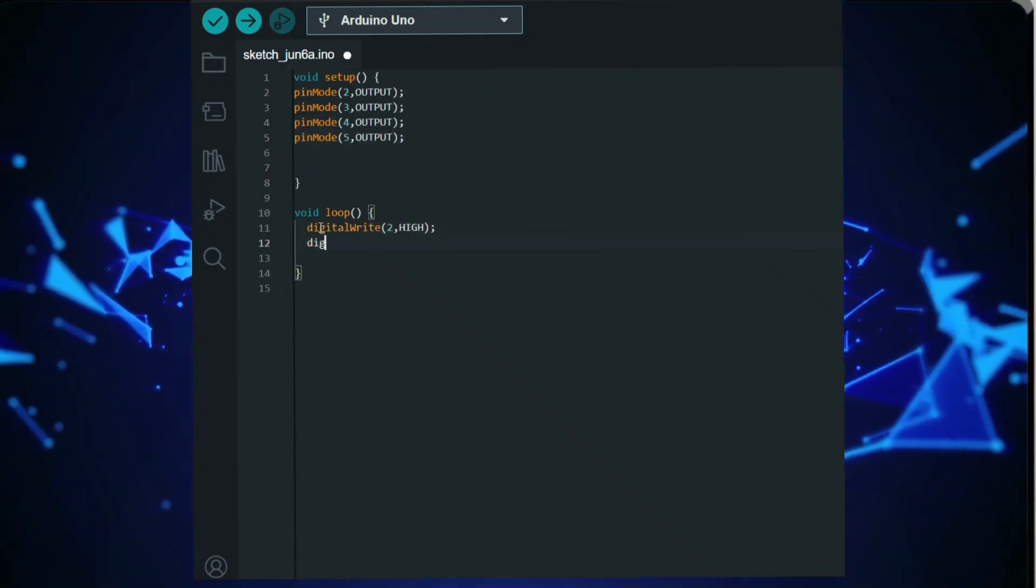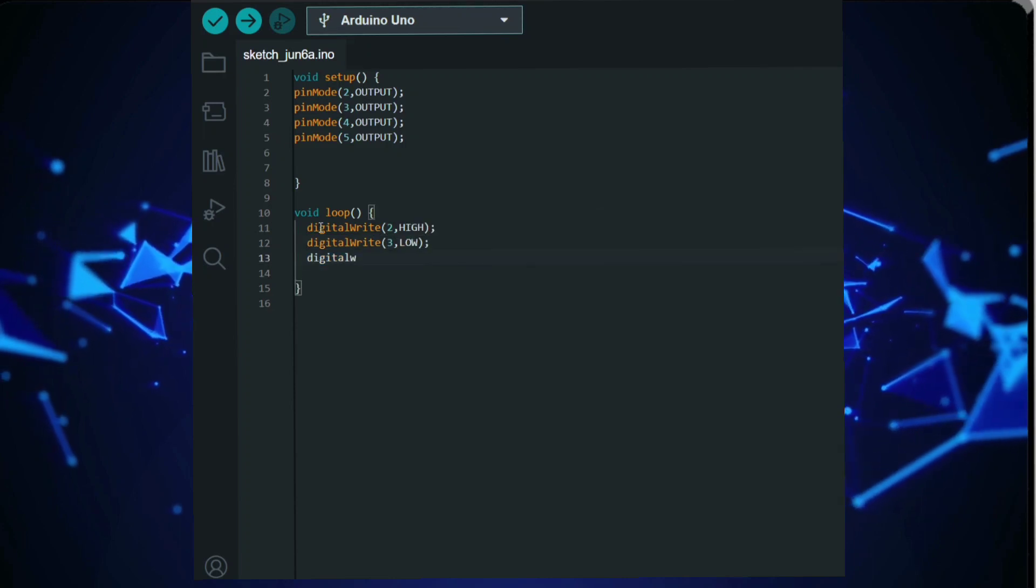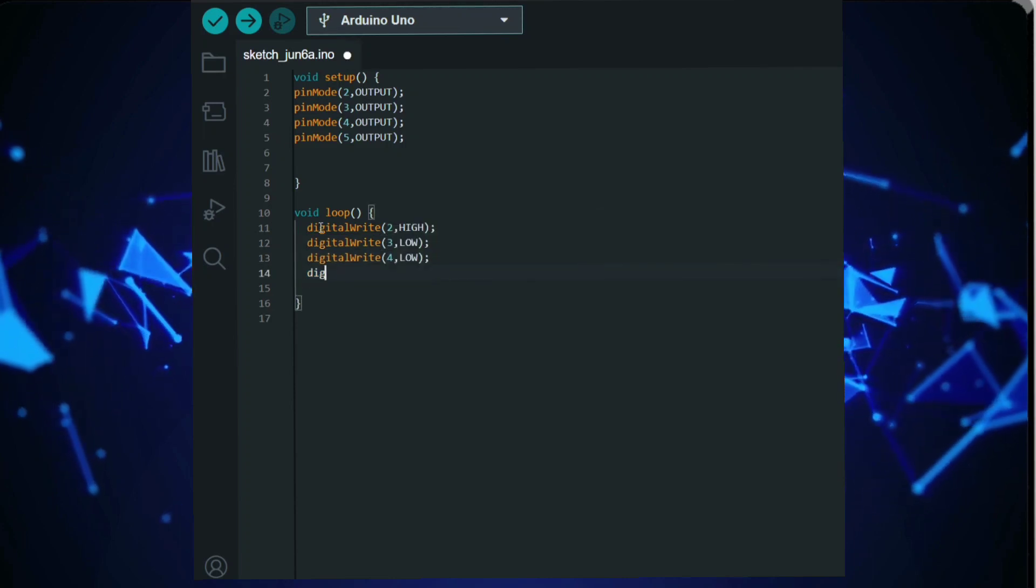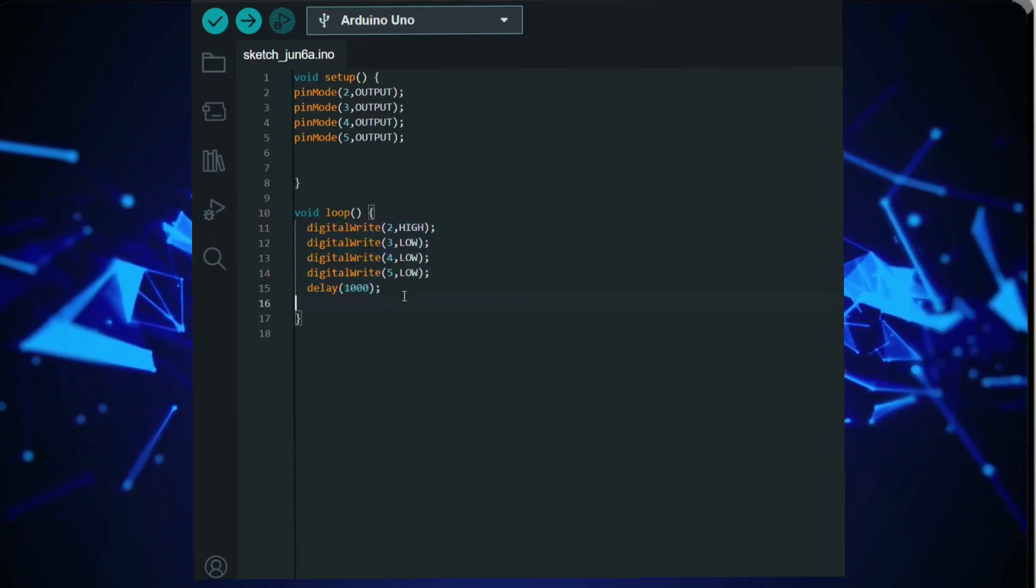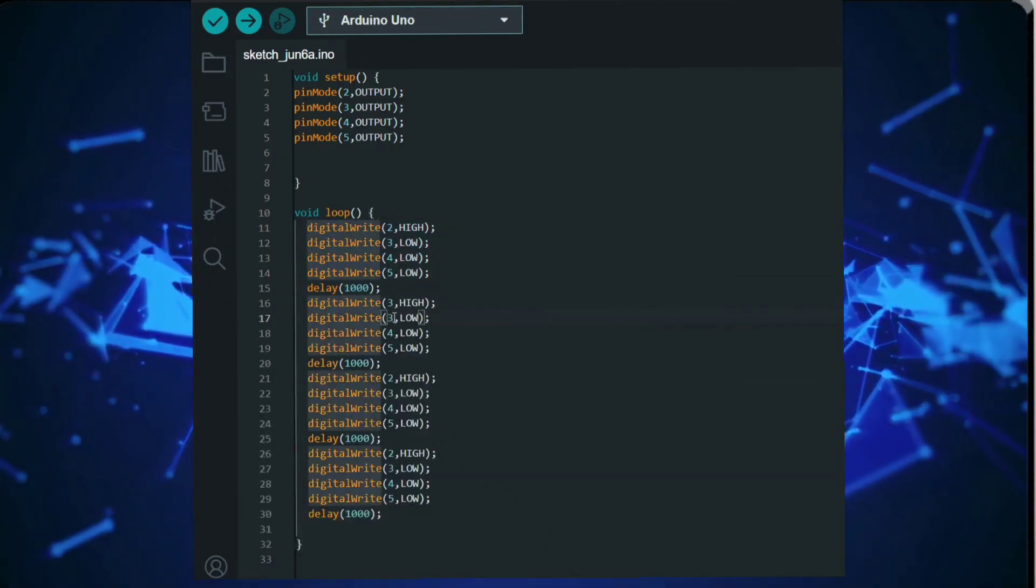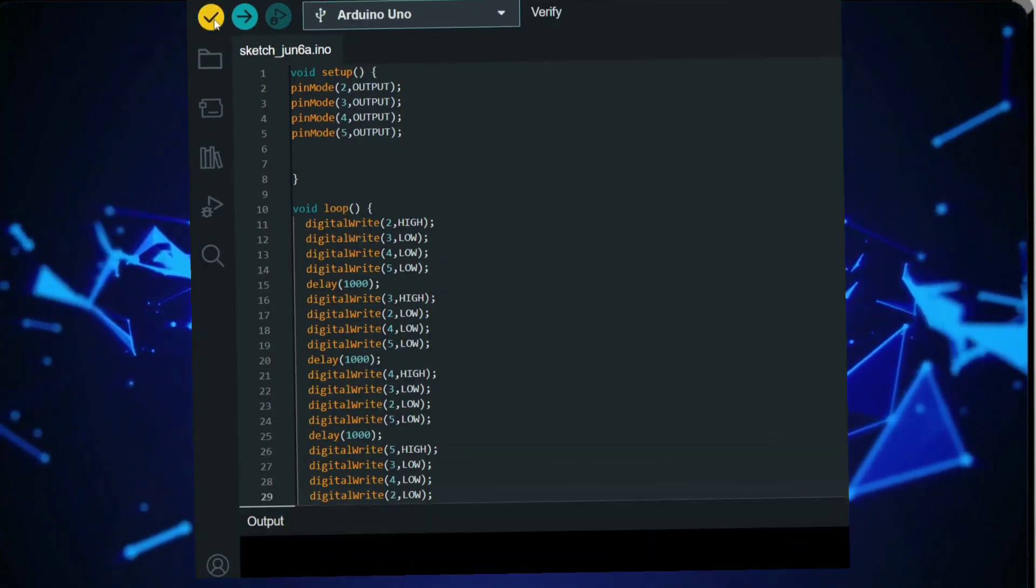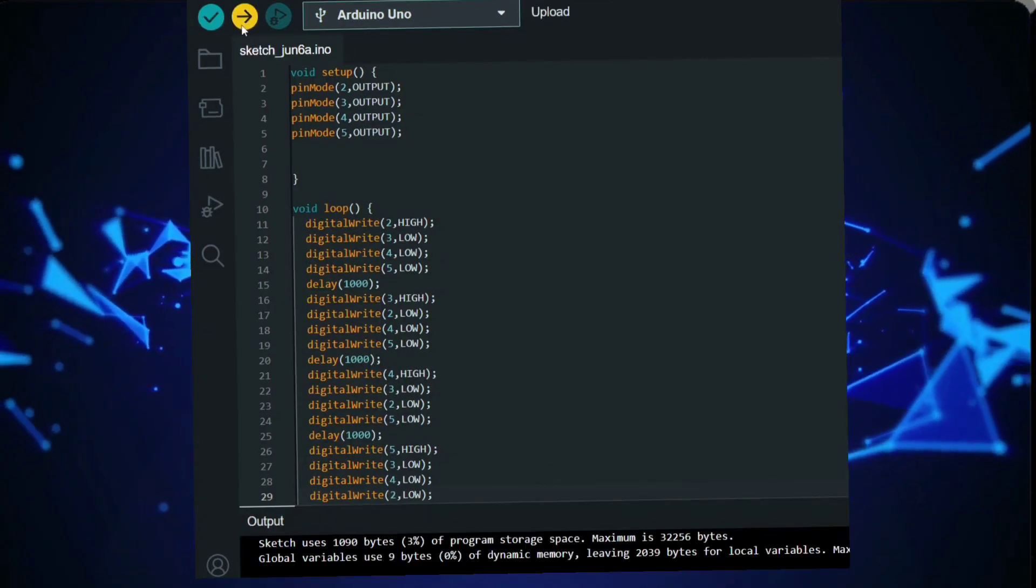Arduino Uno has 32 kilobytes of flash memory, of which 0.5 kilobytes is used for the bootloader. This memory is where the Arduino sketch program is stored. The board is equipped with 2 kilobytes of SRAM, which provides temporary storage for variables and data during program execution.